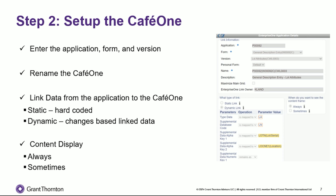In the example we're going to show you today, we'll link lot location and some supplemental database fields to a supplemental database we've set up to tag additional information during the purchase order receipt. So instead of having to go into a supplemental database or a separate application to add additional information during our PO receipt, we'll actually be able to dynamically enter new information and new records as we go through that process. The other thing you can change is the content display — typically I leave it on as always, which means the Cafe One is always displayed, but you can do a conditional display so the Cafe One content only shows up if certain fields or information on your primary application are filled out or present.